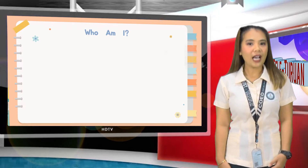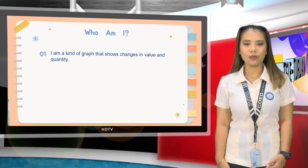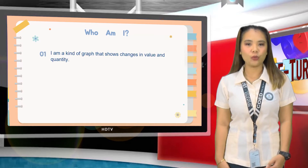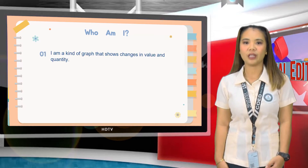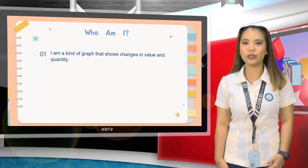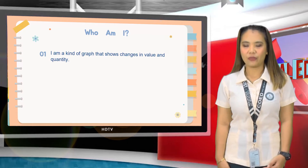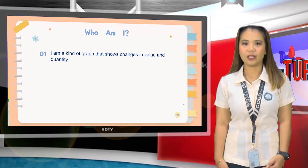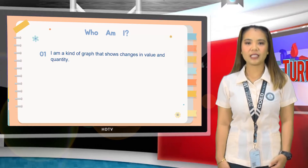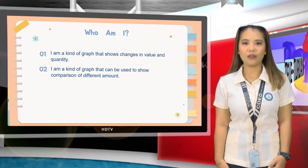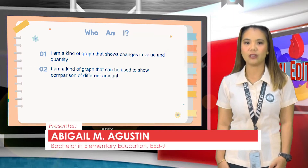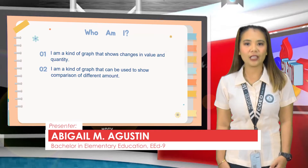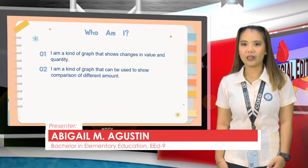First one: I am a kind of graph that shows changes in value and quantity. It is a line graph. Next: I am a kind of graph that can be used to show comparison of different amounts. Correct! A bar graph.